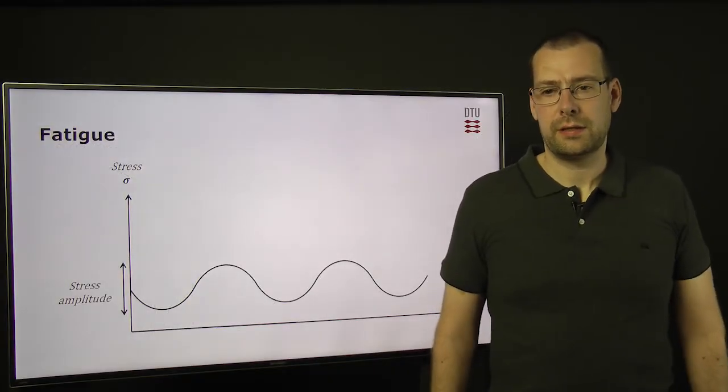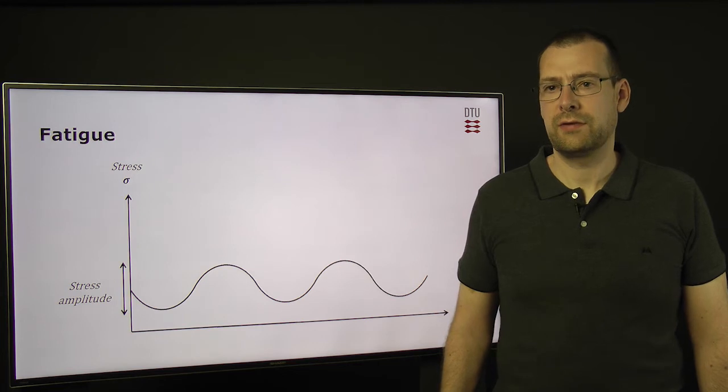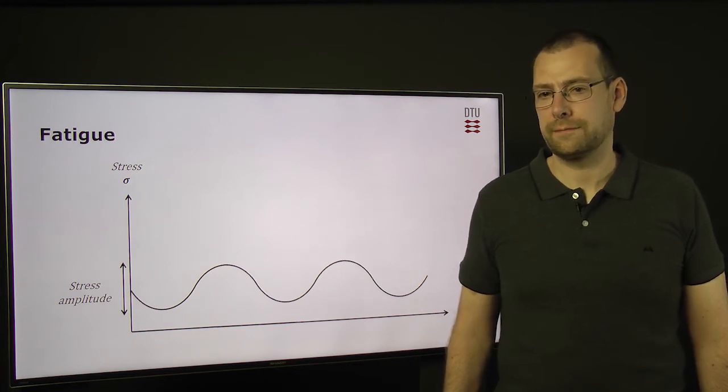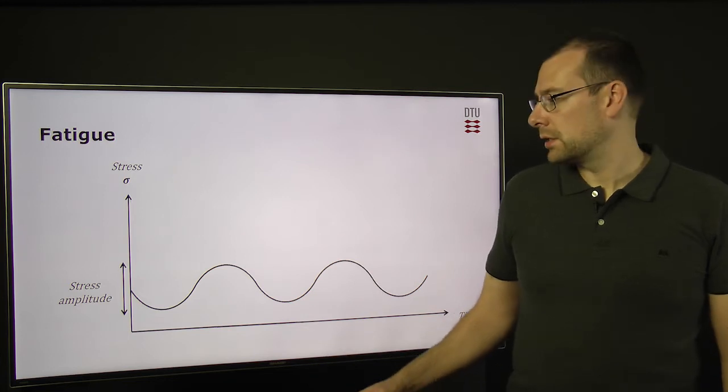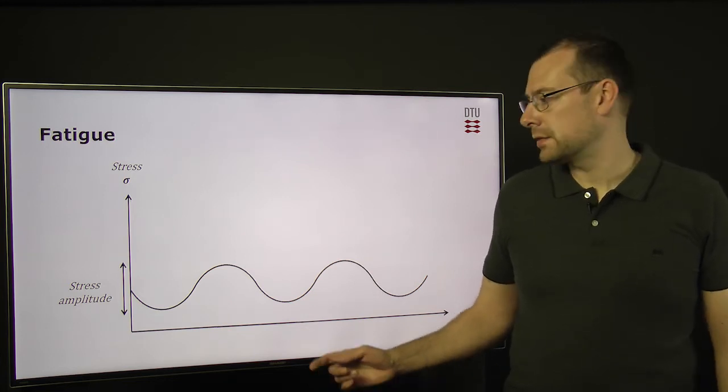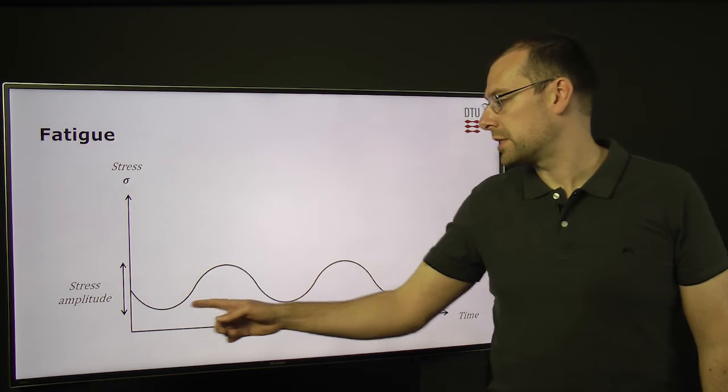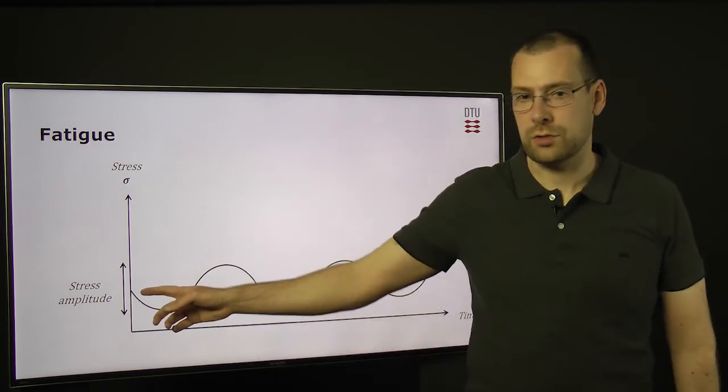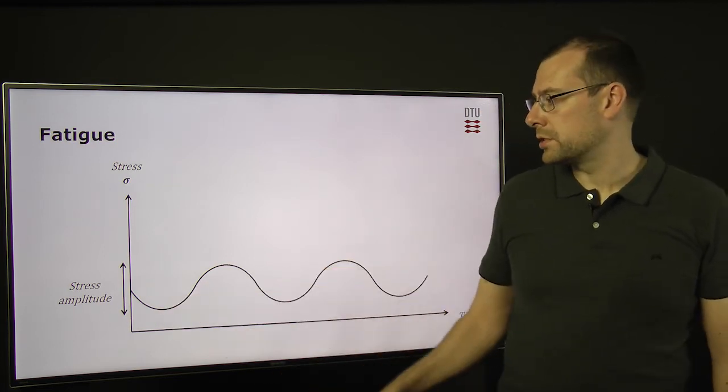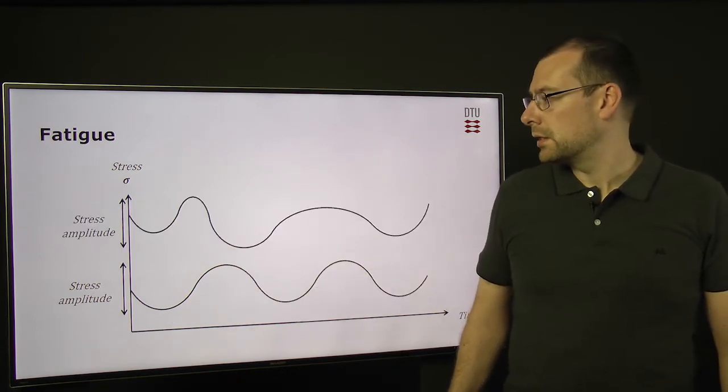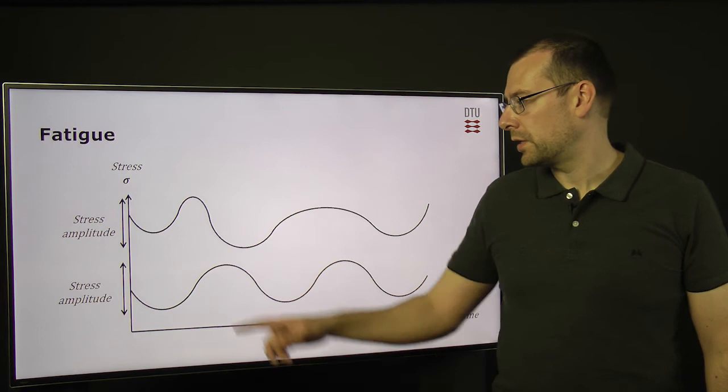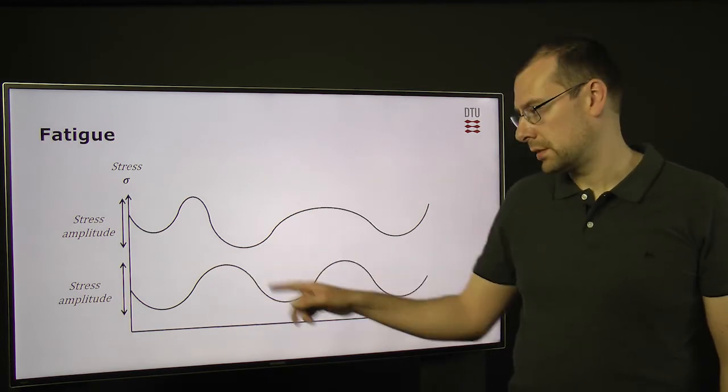When metallic components are exposed to a cyclic stress, they may fail from what is called fatigue. And these stresses can be quite low. And the important factors for fatigue here are the number of cycles and the stress amplitude. So the stress amplitude is the difference between maximum and minimum stress. These curves here can be quite erratic. They don't need to be like a perfect curve.